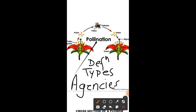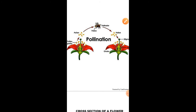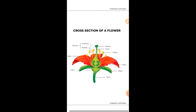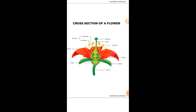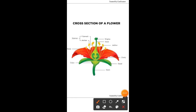Before studying pollination, we must first know the different parts of the flower. This given diagram shows the different parts of the flower — it is the cross section of a flower.